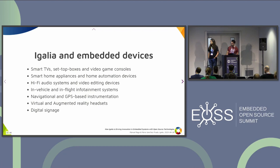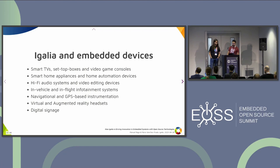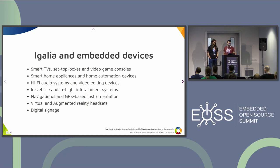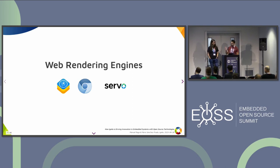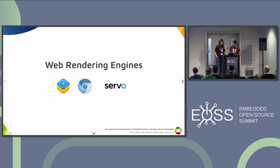There are many embedded device use cases: smart TVs, smart home appliances like cooking machines, audio systems, infotainment systems in cars and planes, GPS, virtual reality headsets, and digital signage like kiosk-mode devices. We are going to go over the different areas, explaining the work that Igalia does in each of them. Now over to Mario.